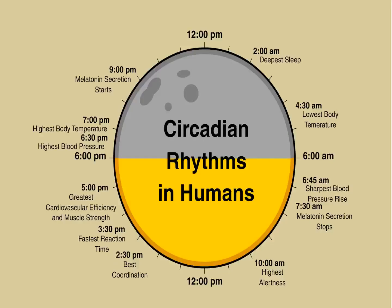The circadian rhythm in humans: at 12 a.m. it is night; at 2 a.m. deepest sleep; at 4:30 a.m. lowest body temperature; then at 6:45, sharpest blood pressure rise; at 7:30, melatonin secretion stops.